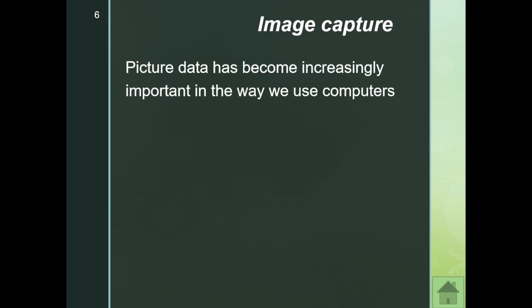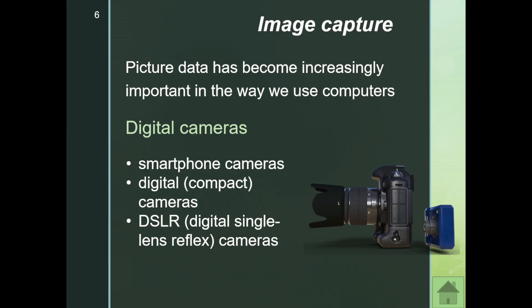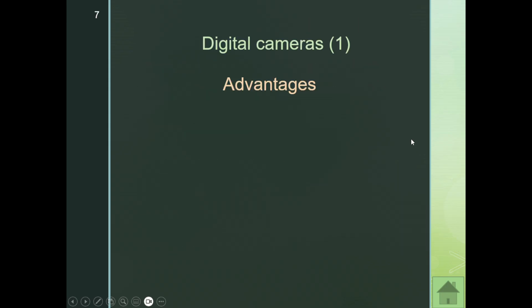First, under input, we have image capture — this means you are taking a picture of something, capturing an image. Picture data has become increasingly important in the way we use computers. We use digital cameras, mostly in the form of smartphone cameras, digital compact cameras, and the larger DSLR cameras where you can detach and attach different lenses. A point-and-shoot digital camera is different from a DSLR.